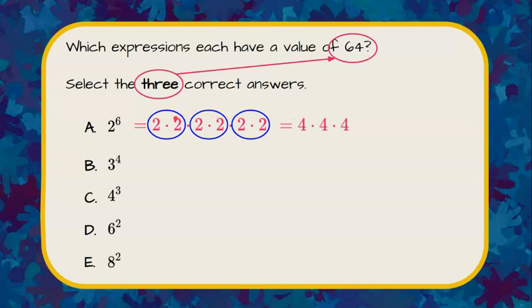So now I have three fours. Four times four is sixteen. Sixteen times four is 64. So it checks, and choice A is equivalent to 64.